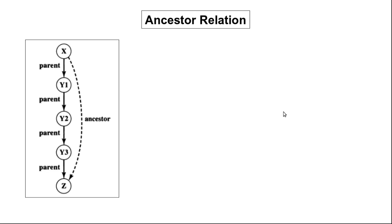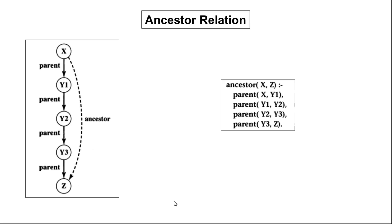Similarly, we have one more possibility where x is the parent of y1, y1 is the parent of y2, y2 is the parent of y3, and y3 is the parent of z — then also x would be an ancestor of z. The rule for this graph says x would be an ancestor of z if there exists y1 where x is the parent of y1, y1 is the parent of y2, y2 is the parent of y3, and y3 is the parent of z. As we can see, we can go on like this.